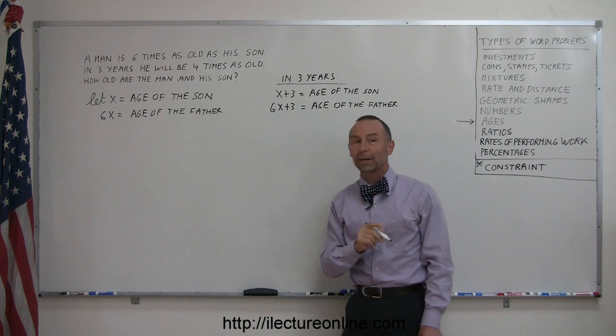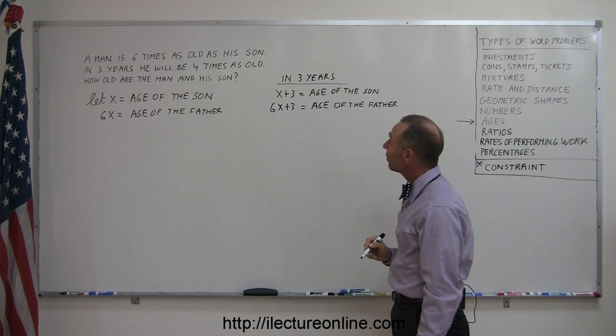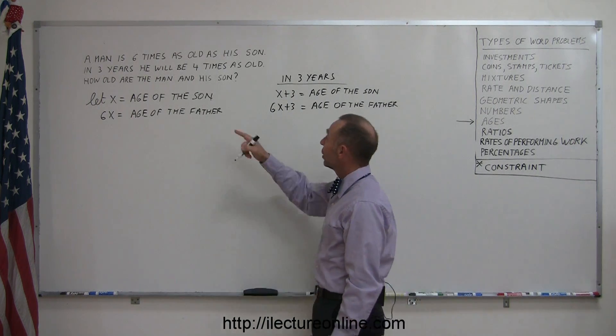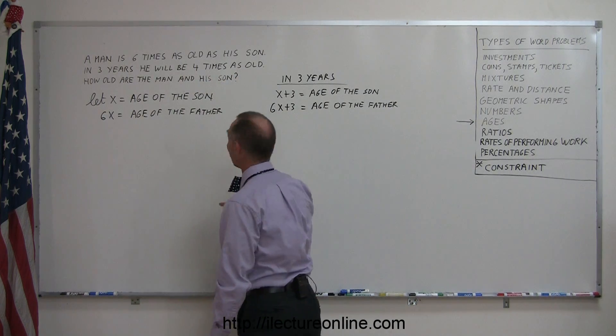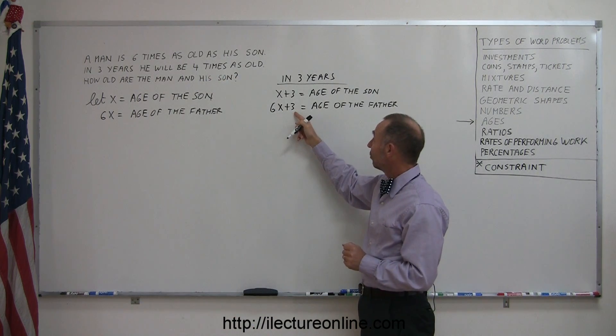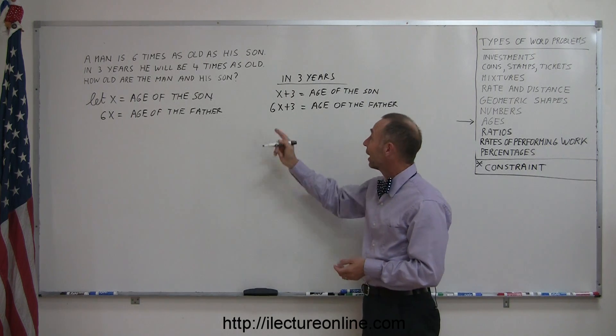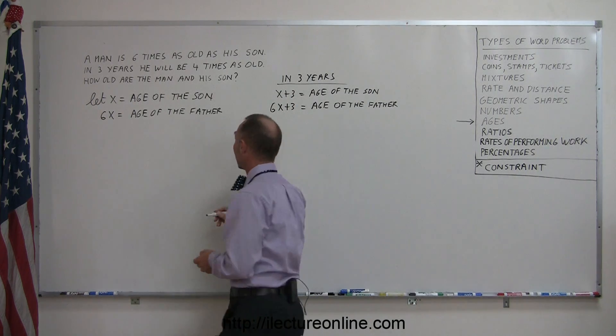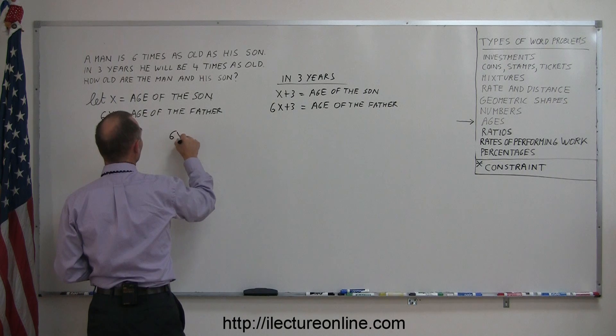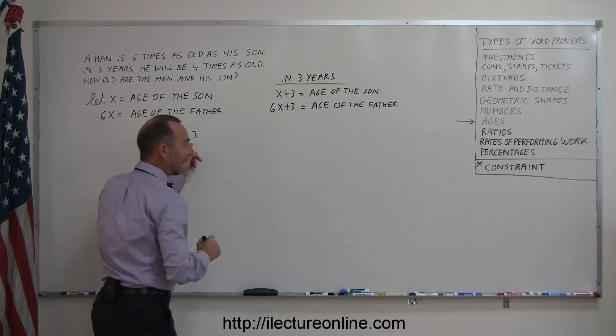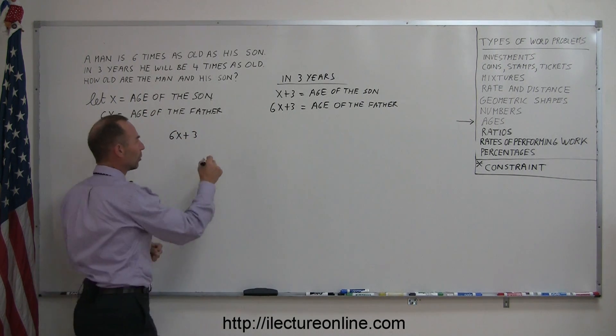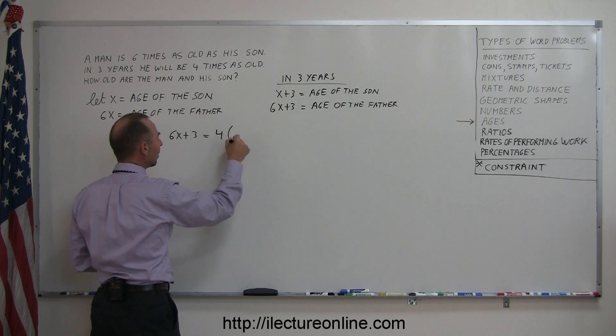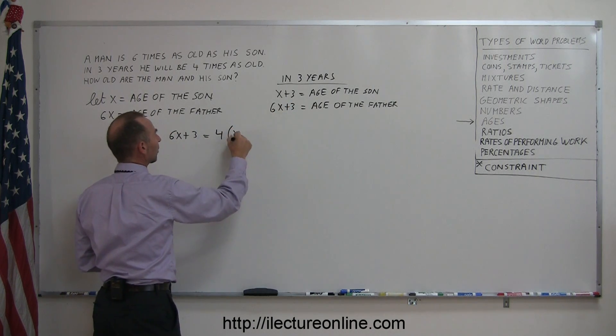Now we're ready to go because we can say that in three years he'll be four times as old as the son. That means this age for the father will be four times as big as this age for the son. So we can say that 6x plus 3, which is the age of the father in four years, will be equal to four times the age of the son, which is x plus 3.